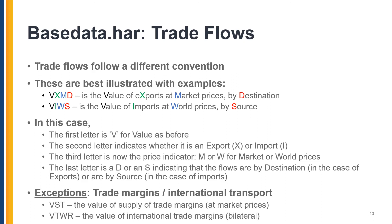There are, however, two exceptions — both relate to trade margins. VST is the value of supply of trade margins, in other words the exports of international transportation. VTWR is also margins on international trade, but this is disaggregated bilaterally.